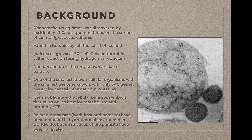Ignococcus grows between 70 and 100 degrees centigrade and it's an autotroph. It grows by sulfur reduction using hydrogen as the reductant to make hydrogen sulfide, and it fixes CO2. Nanoarchaeum was the first, and again before this paper, the only known archaeoparasite. It's one of the smallest known cellular organisms, at about 300 nanometers in diameter, with the smallest genome known. It only had 540 protein-coding genes, and almost all of them are for what you might call the central information processing of the cell — DNA replication, transcription, translation. It's an obligate extracellular parasite, and it relies on its host for all the metabolism, and probably ATP as well — it's probably also an energy parasite.